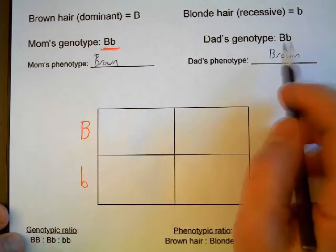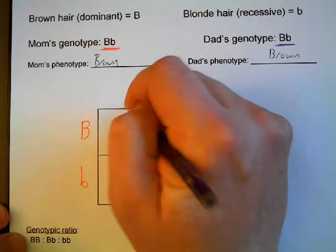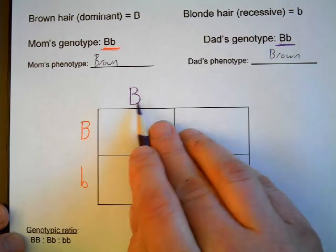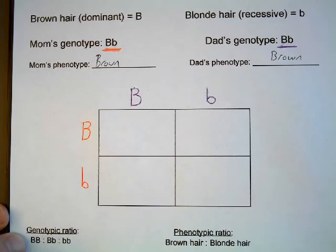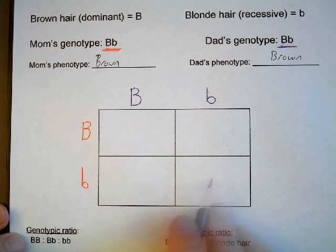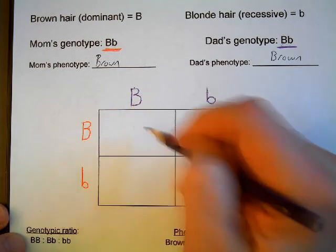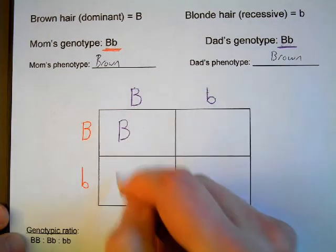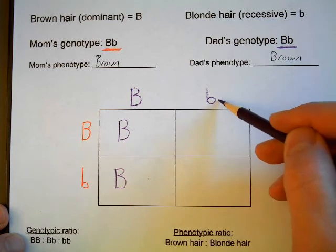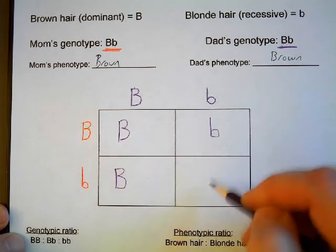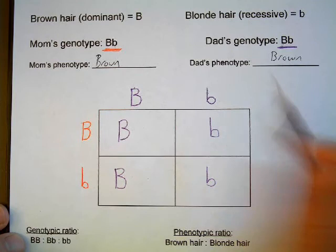Now I'm going to use a different color for the dad's genes — I think I have a purple pencil. I'm going to separate these alleles on the top of the Punnett square. I put the capital B over this column, and then I take this lowercase b and put it over this column. Now I just need to fill in the Punnett square. I take the capital B from the top and put it down into the two squares below it — capital B here and capital B here. Then I take the lowercase b and put a lowercase b and a lowercase b below it.